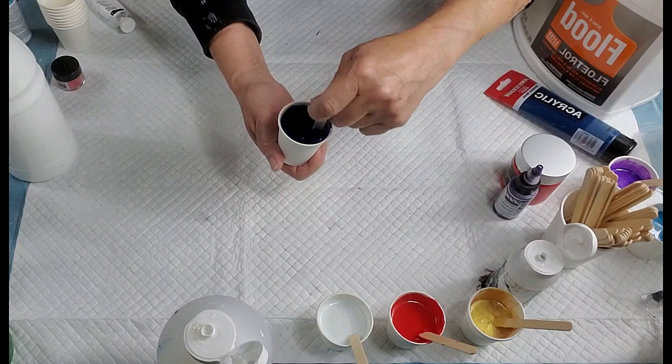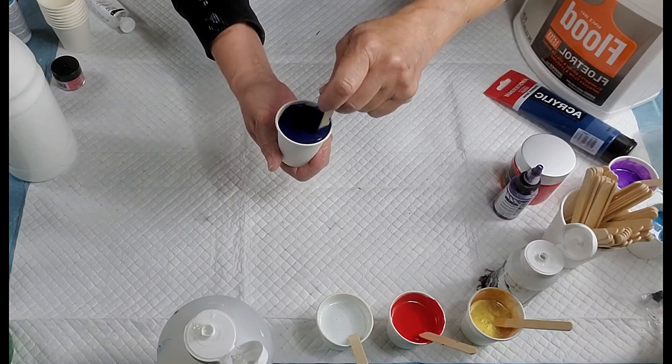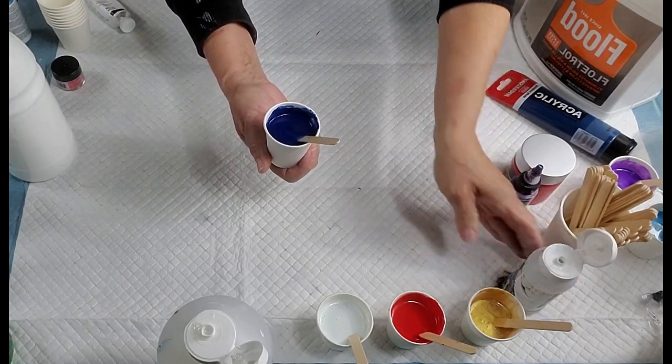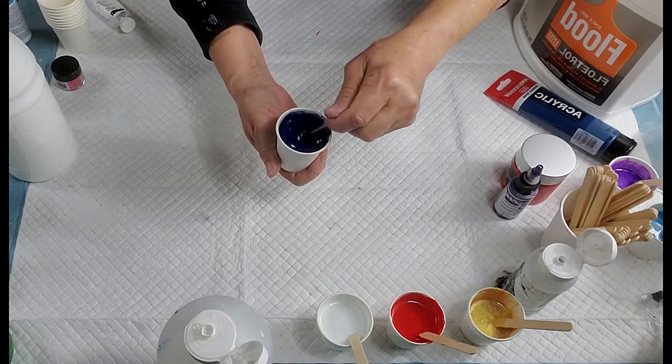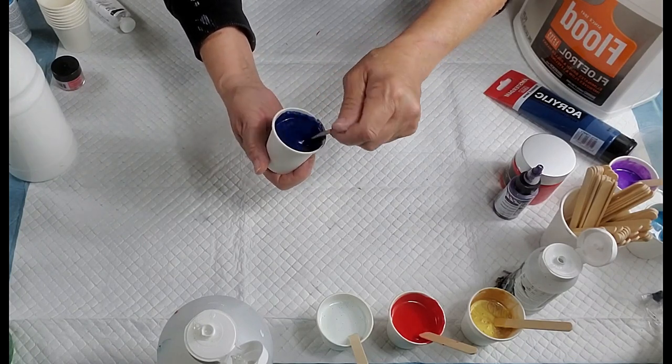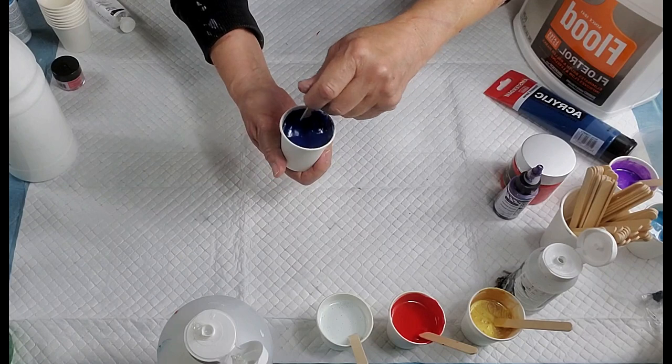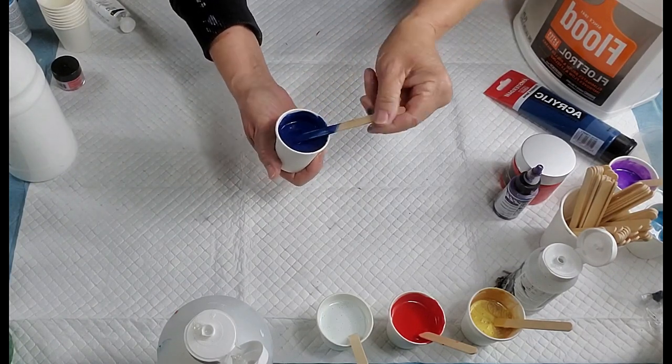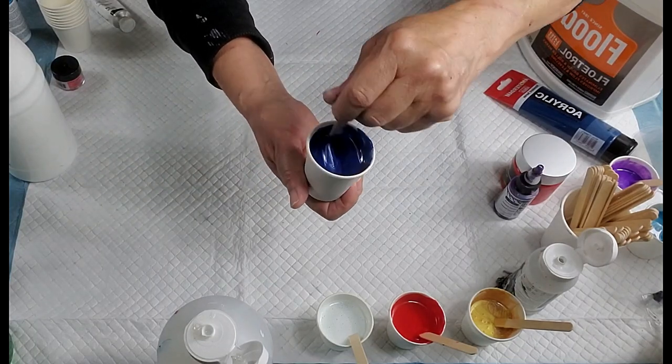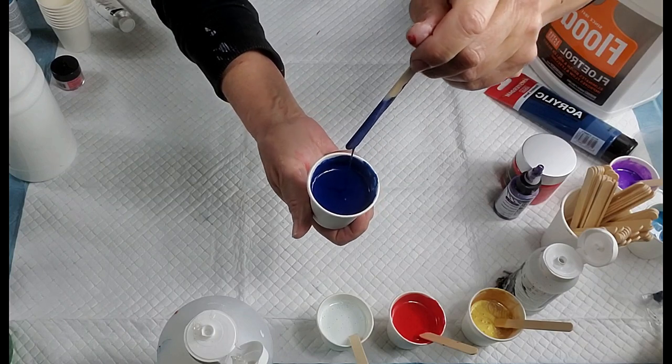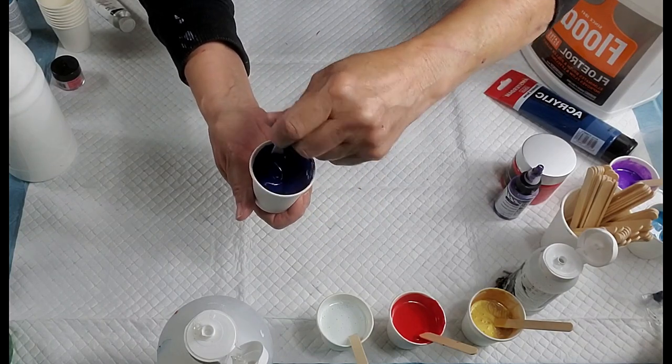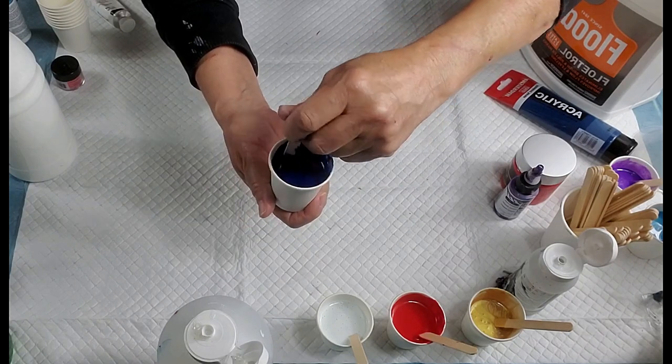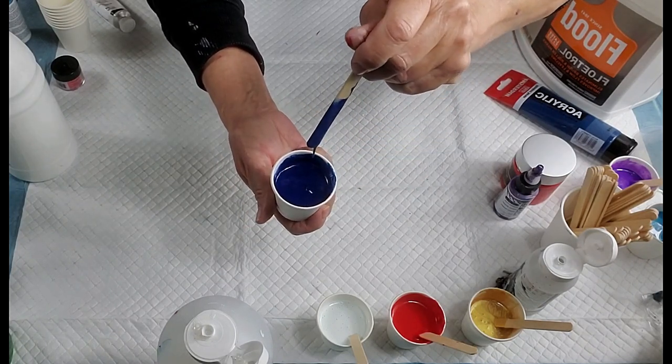So there you go a little bit of flow aid. It's harder to see on that darker color but it's just about the same consistency, it leaves the puddle for a minute, leaves the mound.